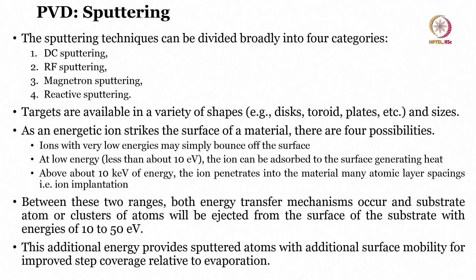In sputtering we are not melting the source material — we are mechanically dislodging atoms from it, compared to EBME or thermal evaporation. Targets are available in various shapes: disc, toroid, plates, and different sizes.